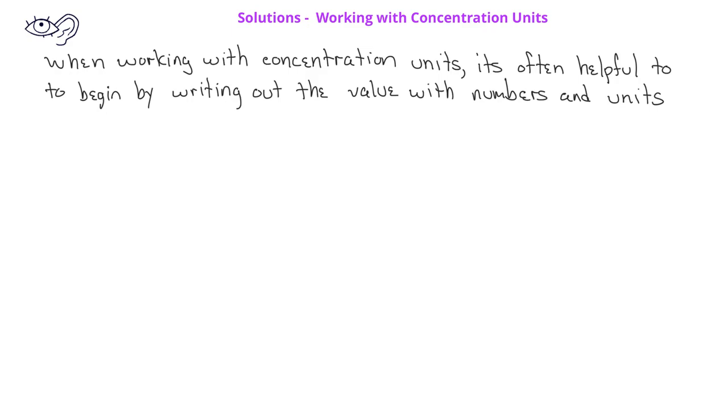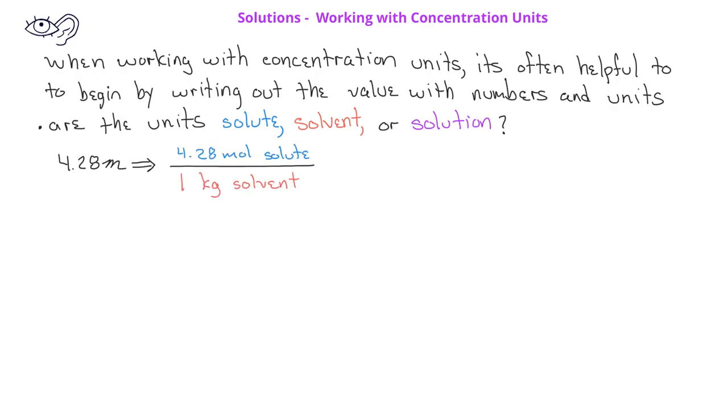You can begin by writing the concentrations with their units. When doing this, you should pay attention to whether the units correspond to the solvent, the solute, or the solution. In other words, if a problem gave you a 4.28 molal solution, you could write this as 4.28 moles of solute over 1 kilogram of solvent.